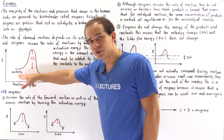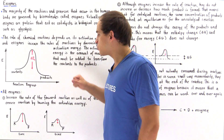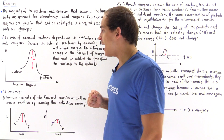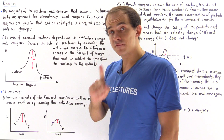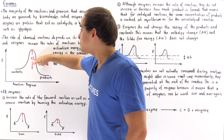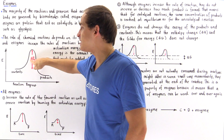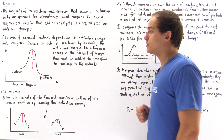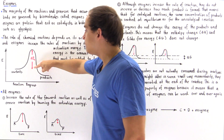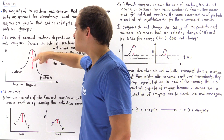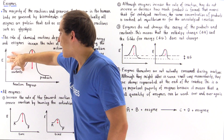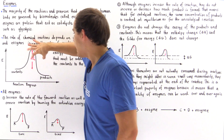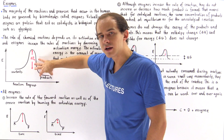For the reactants to actually transform into the products, we have to input enough energy — specifically, this amount of energy which is our activation energy, the activation barrier. If we input this amount of energy, the reactants can basically reach the transition state and then convert to the products.